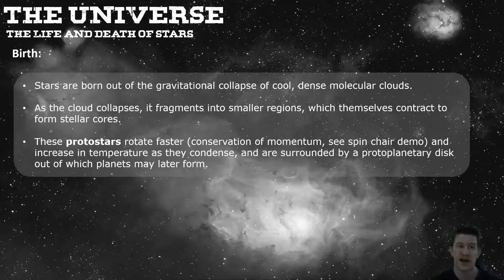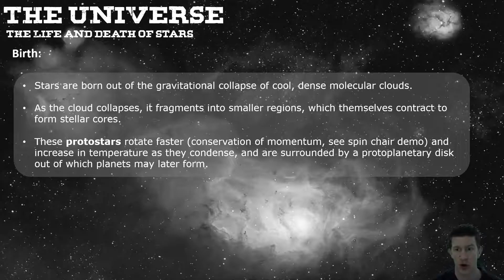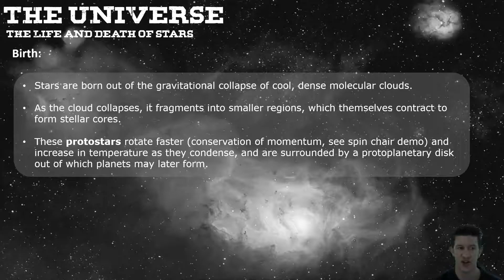A star is born out of the gravitational collapse of cool dense molecular clouds. Those tiny bits of particles — like a nebula, bits of dust, gases, and other materials — anything with a mass has its own gravity, so very slowly they start to attract towards each other and clump together, contracting to form the stellar core, which is basically the start of a star.